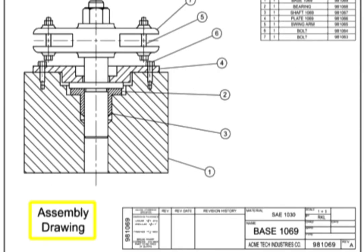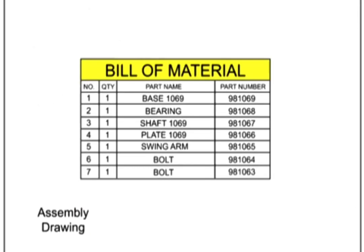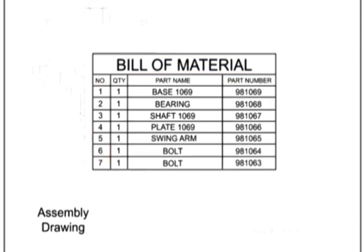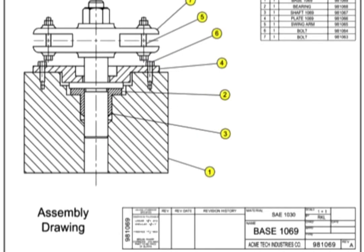An assembly drawing shows two or more separable parts joined to form a final product. The bill of material for an assembly drawing lists all the parts required to make up the assembly. Each part is given an item number, which is then referenced in the field of the drawing with a balloon for ease of location. Older drawings sometimes list the zone location in lieu of a balloon. Assembly drawings can show exploded views or section views. This drawing utilizes a section view to better identify each item in the assembly and to give an interior view of the part.